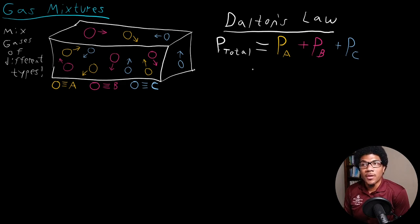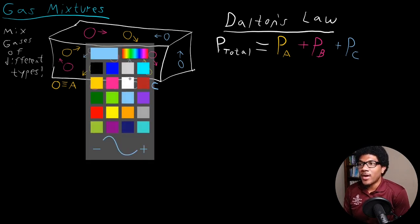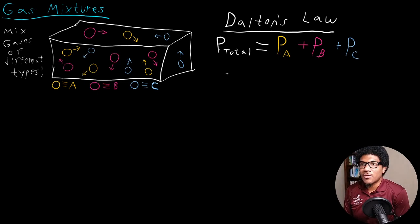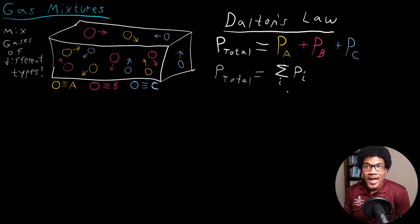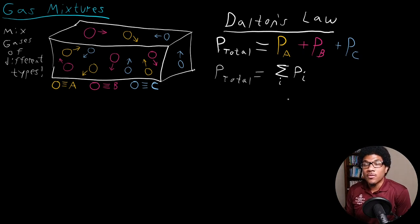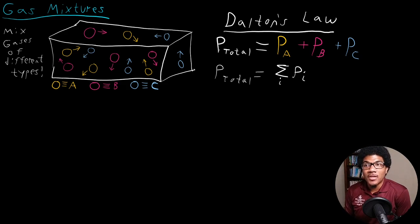For this specific case of three different gases A, B, and C, each would exert their own partial pressure, and you sum all of those up to get the total pressure. In the general case, P_total is equal to the sum — using sigma notation — of all individual partial pressures P_i, where i represents however many gases we have in the container, whether it's two, three, or 500.